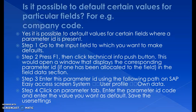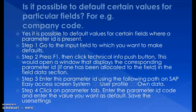Is it possible to default certain values for particular fields, for example the company code? Yes, it is possible to default values for certain fields where a parameter ID is present. To do this, go to the input field you want to default, press F1, then click the Technical Info button. This opens a pop-up window that displays the corresponding parameter ID in the field data section.